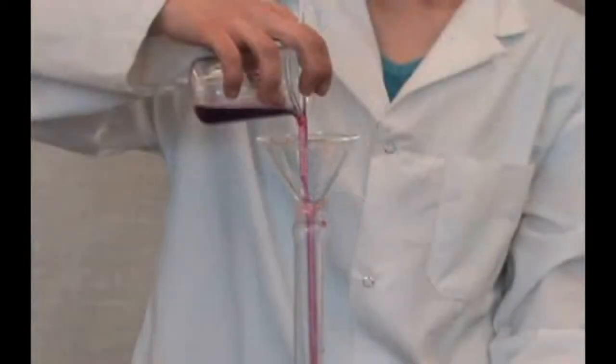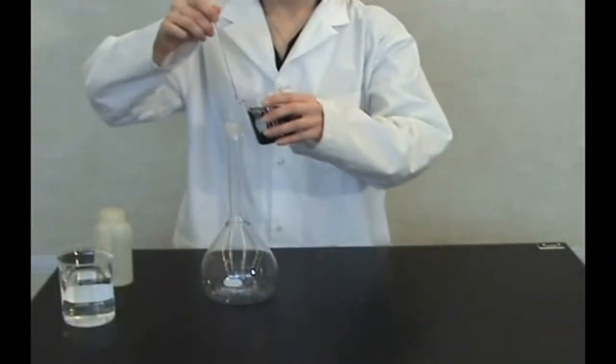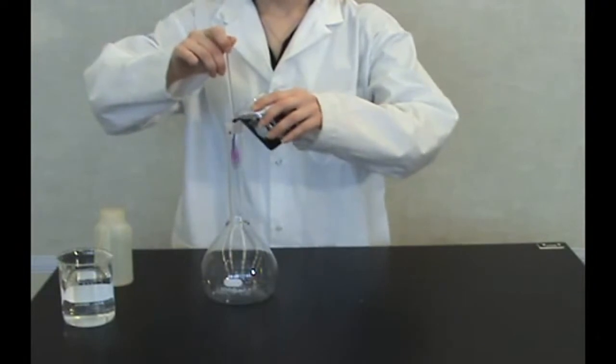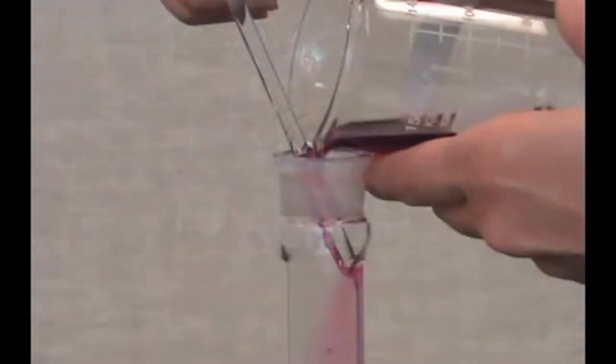Use a funnel to pour the solution into a thousand milliliters volumetric flask. Or if capable, use the glass rod holding it against the spout of the beaker. Make sure the tip of the rod touches the inside of the flask neck to control the flow.